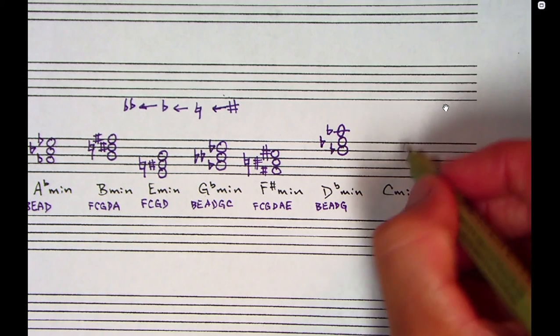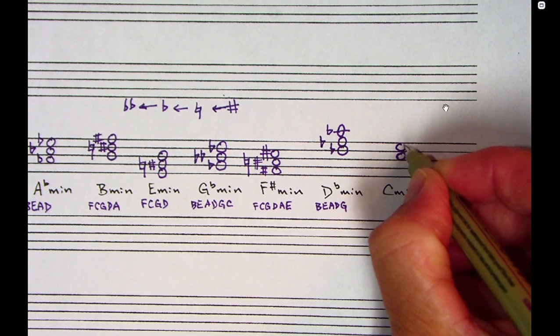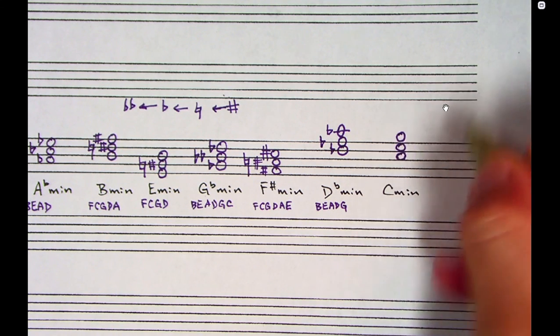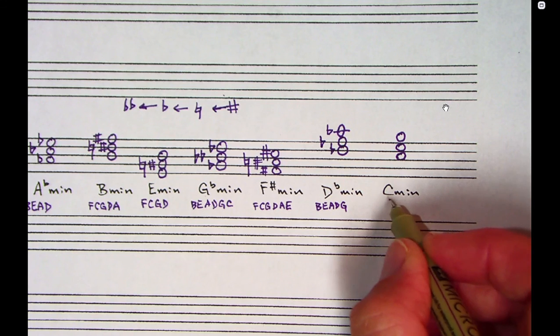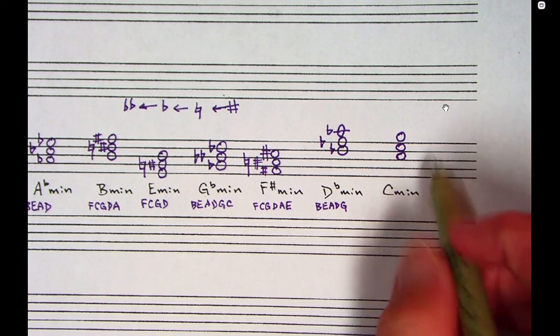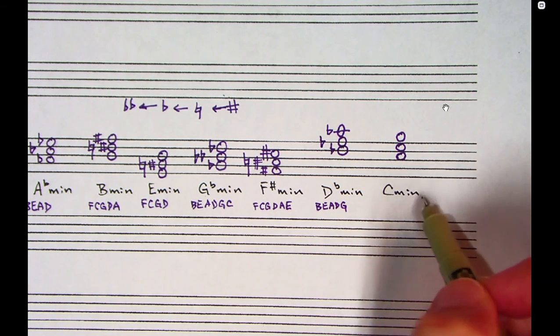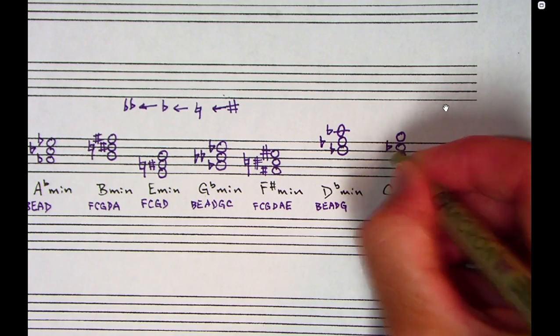Last one. C minor. C is the bottom note. Stack your one, three, five there. C major has no sharps or flats in it. So this is currently C major. To make it C minor, simply lower the middle note.